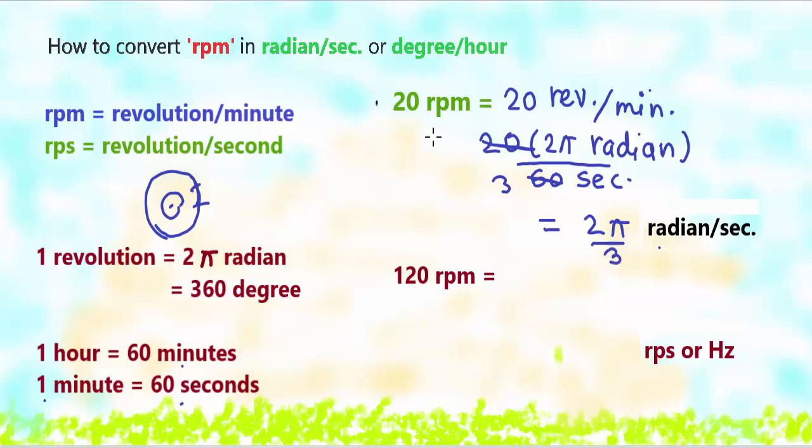You might ask, why do we need to convert RPM into radian per second? Radian per second is the unit of angular velocity. It is the standard unit of angular velocity. Whenever you are given speed of a motor or an object as RPM, you need to convert it in radian per second to find the angular velocity. So basically when we are converting RPM into radian per second, we are actually finding the angular velocity.